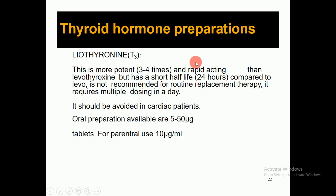The second thyroid hormone preparation is liothyronine, called T3 or triiodothyronine. This is more potent — three to four times — and rapid-acting compared to levothyroxine, but has a short half-life of 24 hours. It is not recommended for routine replacement therapy as it requires multiple daily dosing.